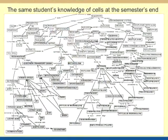She built concept maps from the beginning of the course right through the end of the course, and this is what her knowledge of cells looks like at the end of the semester of study of biology. Look how complex her knowledge structure is. By doing concept maps regularly through the semester, she has built this powerful knowledge structure.